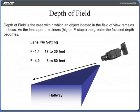Depth of field is the area within which an object located in the field of view remains in focus. As the lens aperture closes, at higher f-stops, the greater the focus depth becomes.